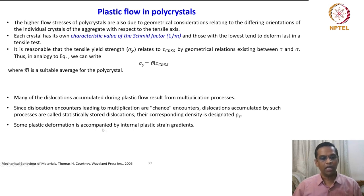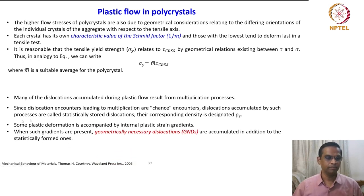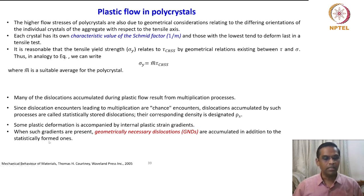Some plastic deformation is accompanied by internal plastic strain gradients. If the plastic deformation generates a strain gradient inside the material, what type of dislocation will it generate? When such gradients are present, geometrically necessary dislocations are accumulated in addition to the statistically stored ones.